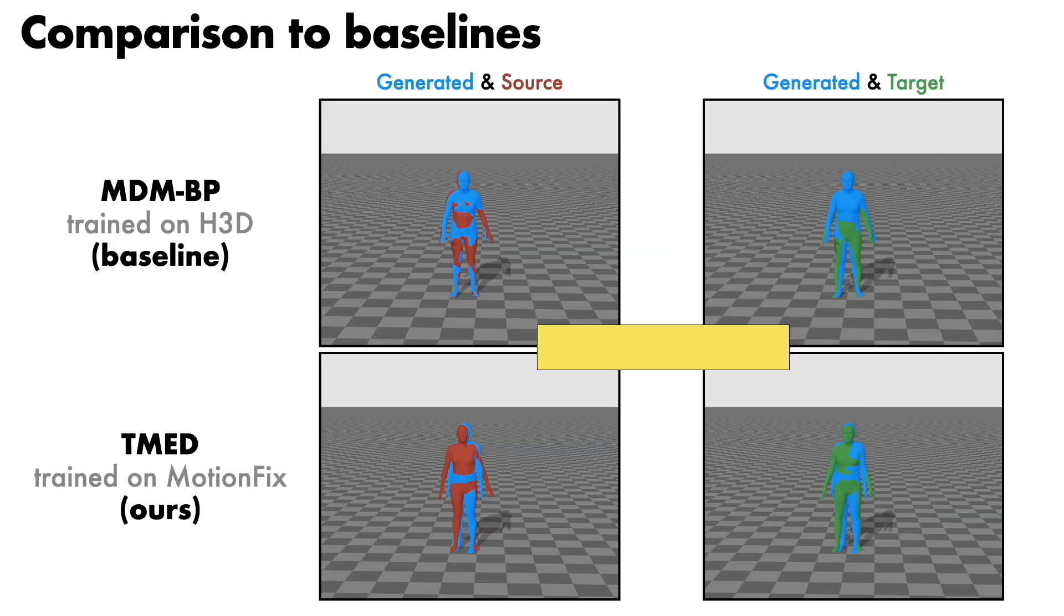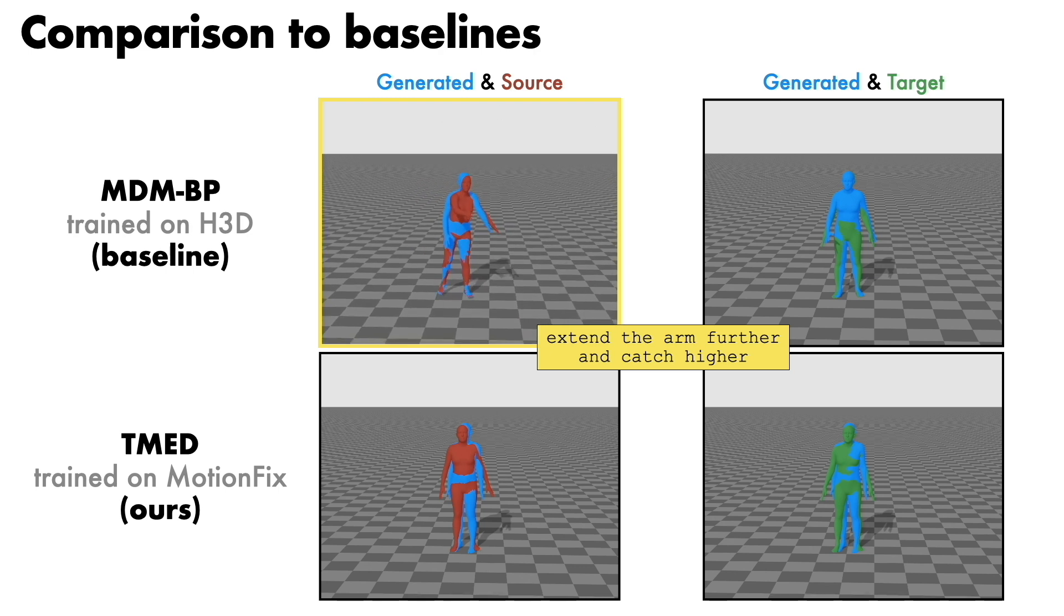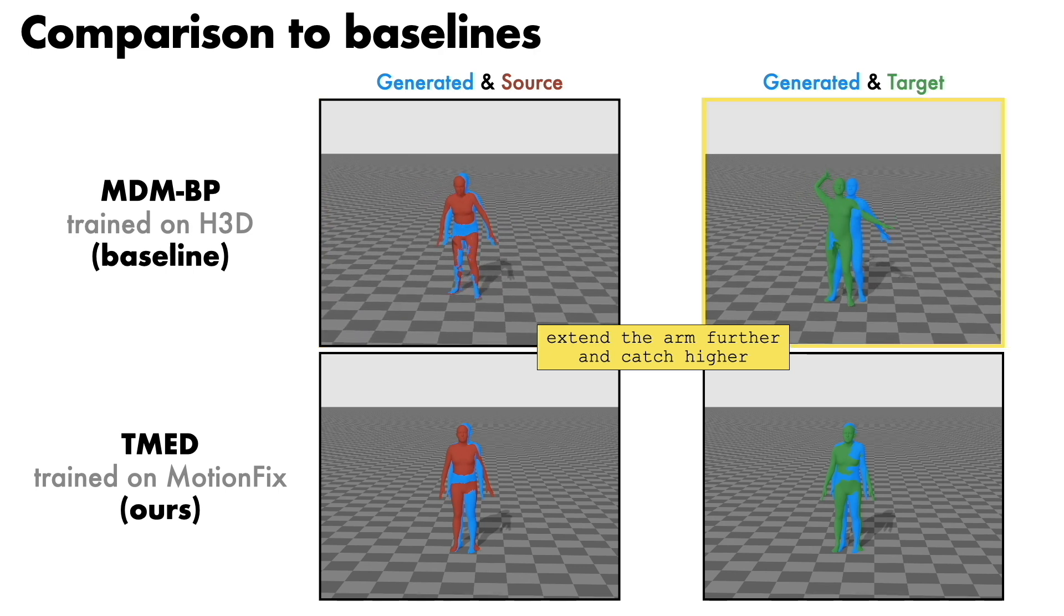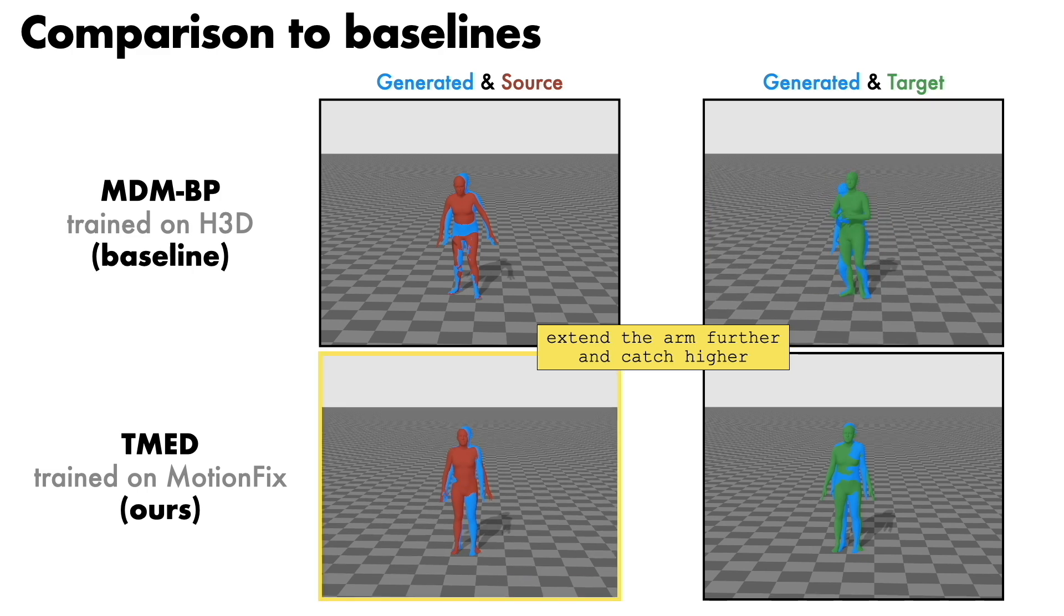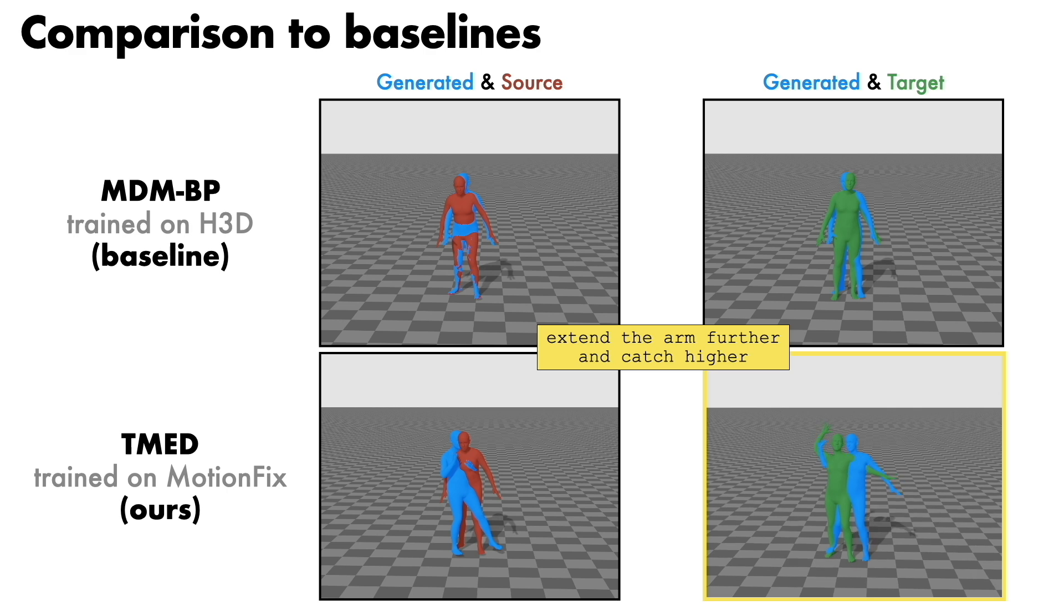For the text extend the arm further and catch higher, the baseline has never seen comparative words like higher or further and ignores the first action of the motion while catching with a single hand. Our model successfully generates the edited motion.